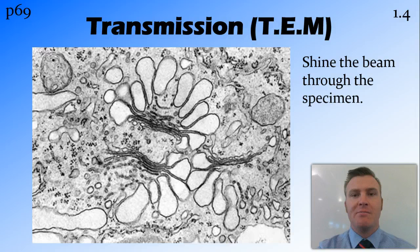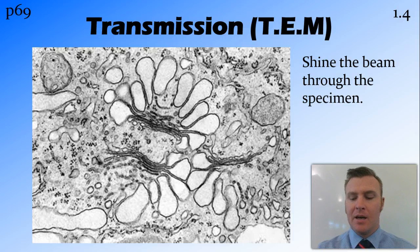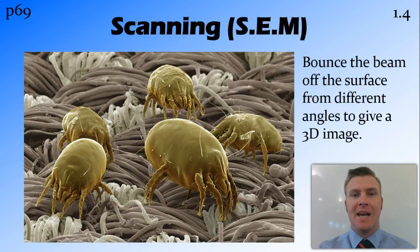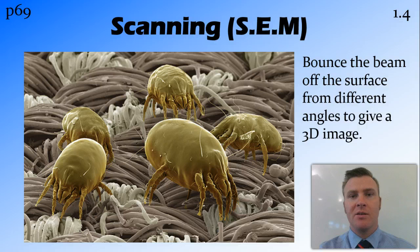The transmission electron microscope, or TEM, works by shining a beam of electrons through a specimen and gets an image in two dimensions. A scanning electron microscope, or SEM, rather than going through, bounces the beam of electrons off the surface of the specimen from different angles, and this creates a three-dimensional image.